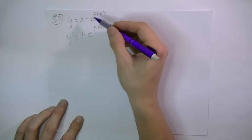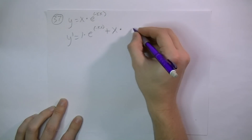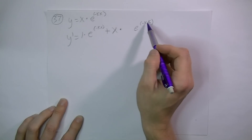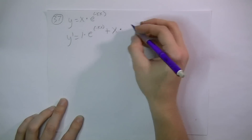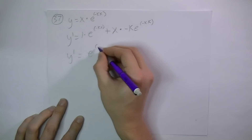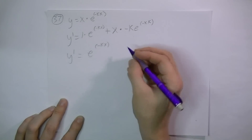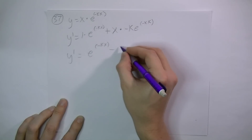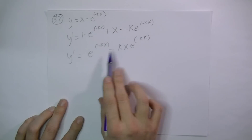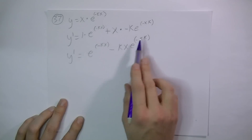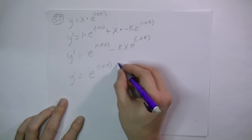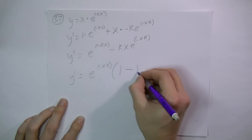The derivative of e raised to some power requires the chain rule: e to this power stays the same, and then we multiply by the derivative of the inside, which would be negative k. So y prime equals e to the negative kx, and then minus kx times e to the negative kx. You can see that each term has e to the negative kx in it, so I'm going to factor that out. That leaves me with e to the negative kx times quantity 1 minus kx.